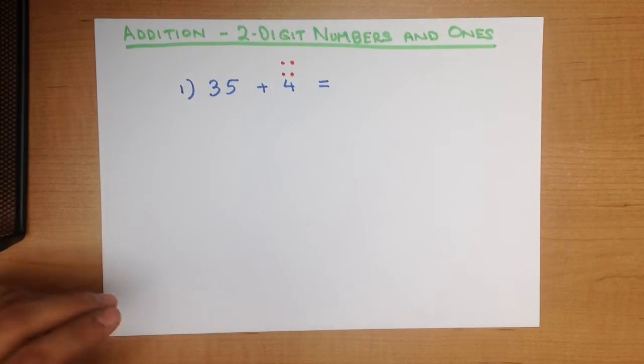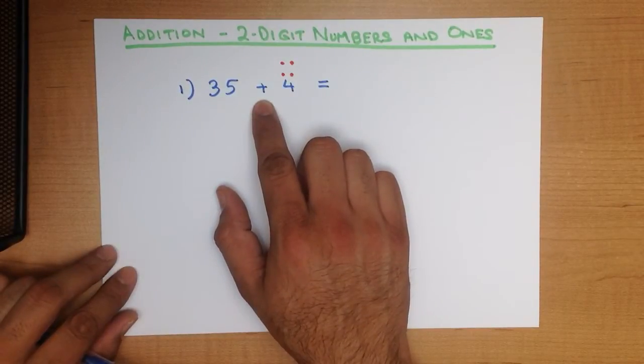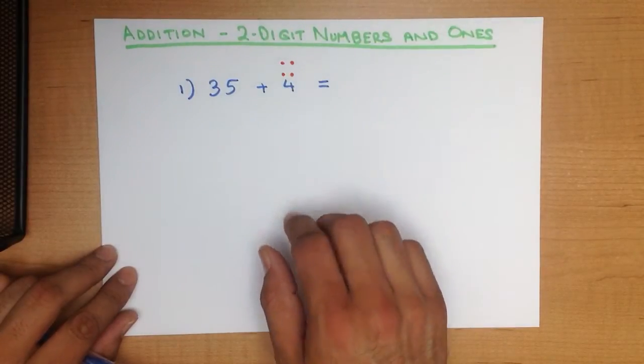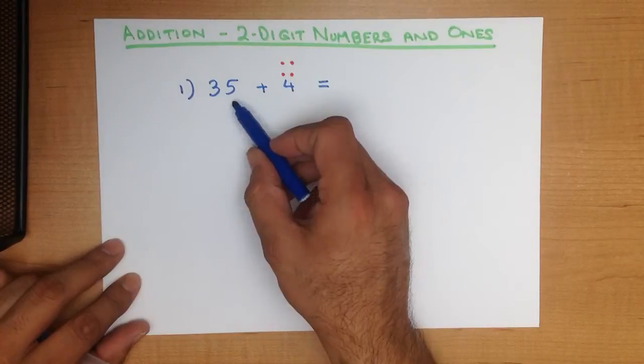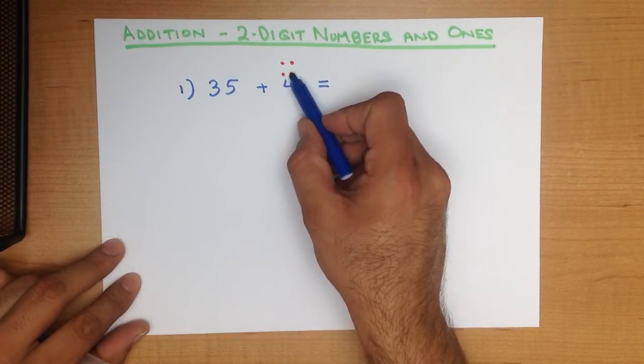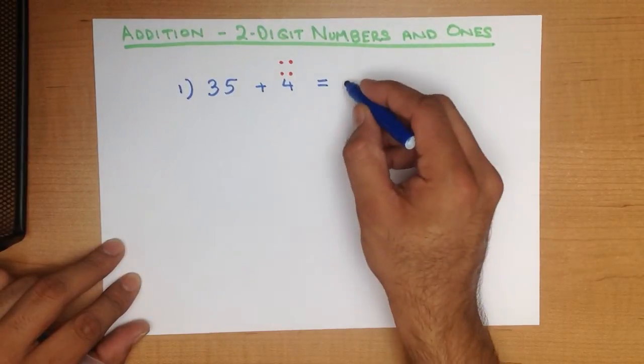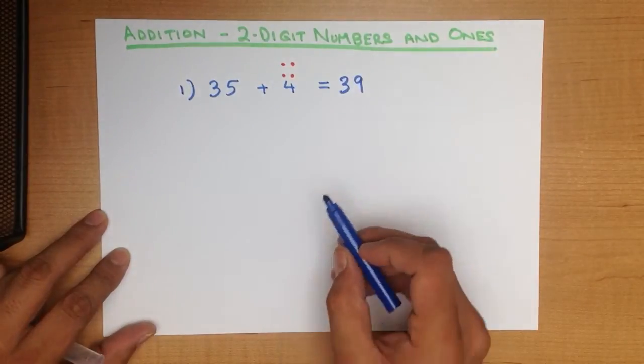And what we do is we simply count forward because we are adding. We are not minusing, we are adding. So we count forward from 35 the additional four dots. So let's do that. 35, 36, 37, 38, 39. And that is our answer, 39.